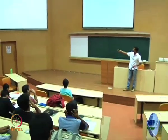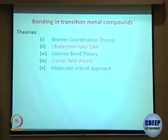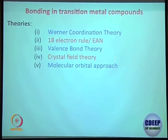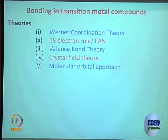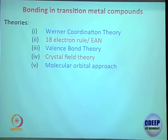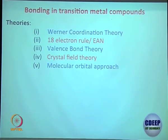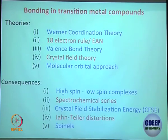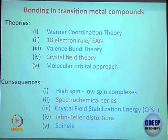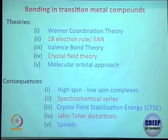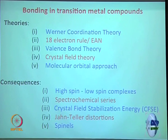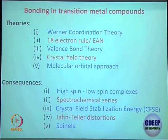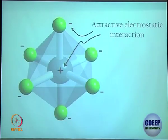In the last class we were discussing Werner coordination theory, the 18-electron rule, valence bond theory — how good it is and how bad it is — and how good crystal field theory is. We will stop there; not too much will we get into the molecular orbital approach. The major objective for this chapter is giving you an idea about high spin and low spin complexes, the spectrochemical series, crystal field stabilization energy, Jahn-Teller distortion, and spinel — the last two topics we will discuss today.